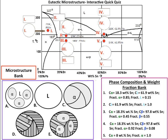Here's question 8, at the point 210 degrees Celsius and 61.9% Sn, at Roman numeral 4, which is this red dot right here, what is the microstructure? Your answer would go in this bubble here, and your choices are A, B, C, D, and E.